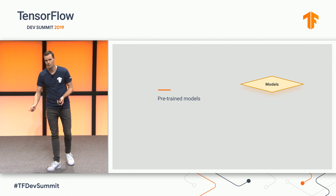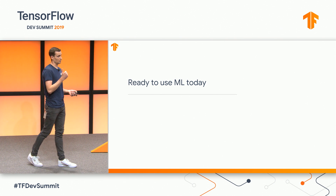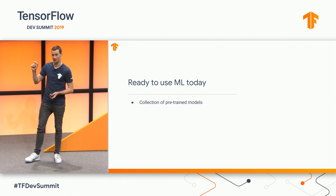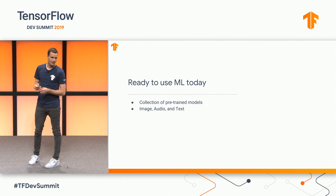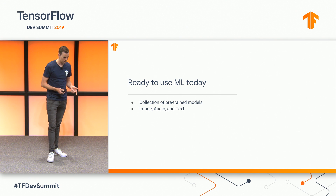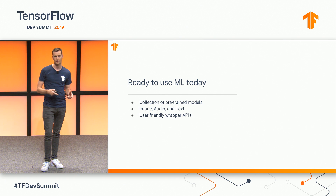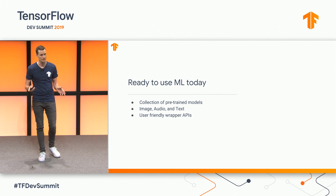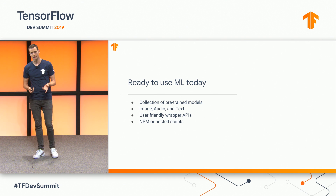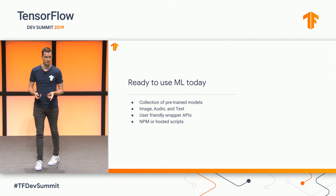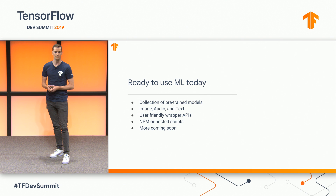The first thing I want to showcase is some of our new off-the-shelf models. Our off-the-shelf models are a bunch of pre-trained image, audio, and text classification models. The APIs are all user-friendly — you don't have to worry about converting images to tensors or resizing. They're very high-level, easy-to-use APIs. These are available on NPM for local application development, or we also have pre-compiled hosted scripts. We're also working on this a lot in the upcoming year and will have more and more models as we go forward.